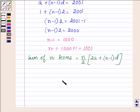So sum will be equal to n is 1001 upon 2, 2a is 1, plus again 1001 minus 1 into d is 2.